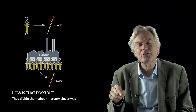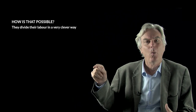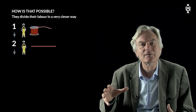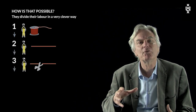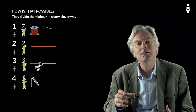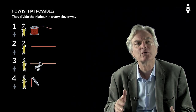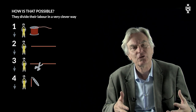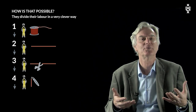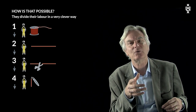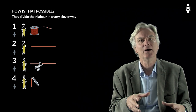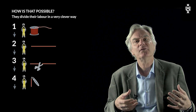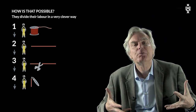Adam Smith describes the process in detail. He says: one man draws out the wire, another straightens it, a third cuts it, a fourth points it, a fifth grinds it at the top for receiving the head. To make that head requires two or three distinct operations, and so on and so on. By dividing the relatively simple task of producing a pin into several subtasks, the labour productivity explodes.